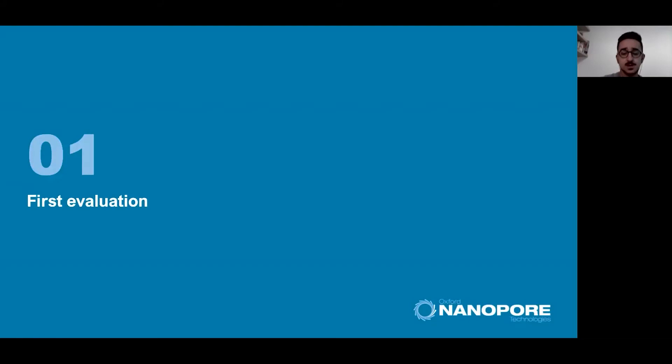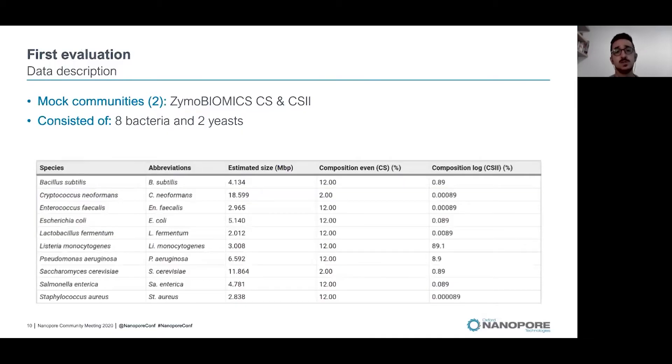In our first evaluation, we used two different mock communities, both from ZymoBIOMICS. They consisted of eight bacteria and two yeast. They were the same microorganisms for both mock communities, but they differ in the composition of the taxa. We had an even composition and a logarithmic composition. It's important to highlight that in the even composition, the yeast were in a lower fraction.